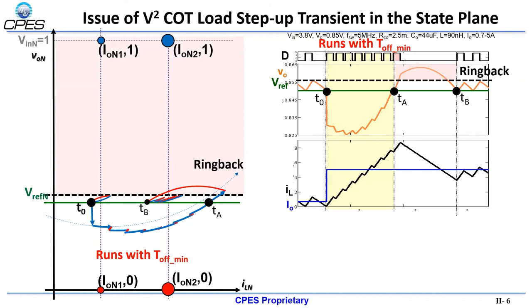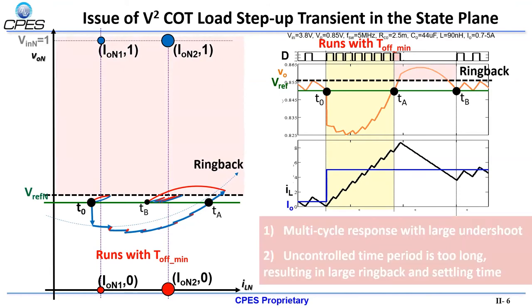Not only does the conventional v-square constant on-time control have multiple cycles, it can also result in a large uncontrollable time period, which results in a large ringback and settling time.